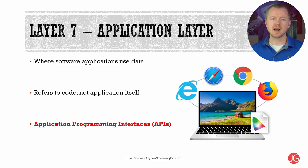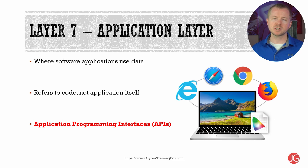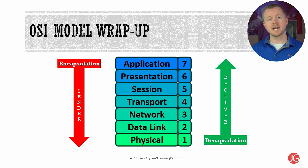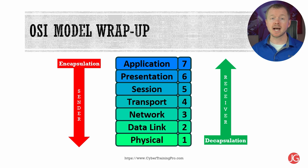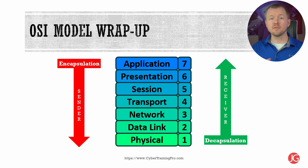The application layer is where the software applications use the data. For example, to browse the web you'll need a web browser like Google Chrome, or to read email you might use Microsoft Outlook. The application layer doesn't refer to the specific application though — more so it's about the code built into the operating system that enables network-aware applications. The APIs or application programming interfaces are what programmers use to actually make their programs network aware. As a reminder, communication on the sending system starts at the application layer and works its way down the OSI model. Each layer adds its own information — we call this encapsulation. Then on the receiving end, the system works its way up from the physical layer, removing data as it goes, and we call this decapsulation.